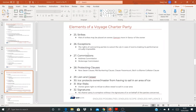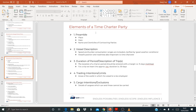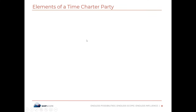Now let's look at the elements of the time charter party form. Before getting into it, let's recollect what we studied in lecture one. In a time charter party, there are certain costs: the variable costs are borne by the charterer, and the fixed costs are borne by the ship owner. Variable costs are all costs pertaining to a voyage — if the charterer is undergoing a voyage, all those costs are taken care of by the charterer.